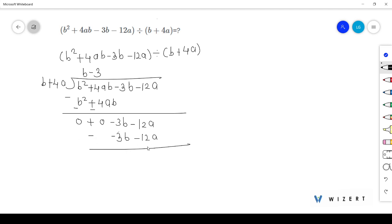Now do that subtraction. -3b + 3b is 0. -12a + 12a is 0. So our remainder is 0 here.